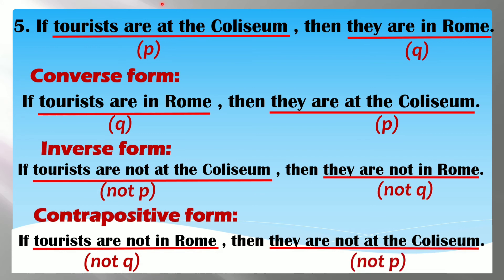Ganun lang po kadali ang pagsusulat o pag-rewrite ng if-then form bilang converse, inverse, at contrapositive. Tatandaan: sa if-then form nauna si hypothesis bago si conclusion. Pag converse, nauna na si conclusion then si hypothesis. Pag inverse, i-co-contradict natin yung if-then — magiging not P, not Q. And then contrapositive — not Q, not P. So: if P then Q → converse: if Q then P → inverse: if not P then not Q → contrapositive: if not Q then not P.